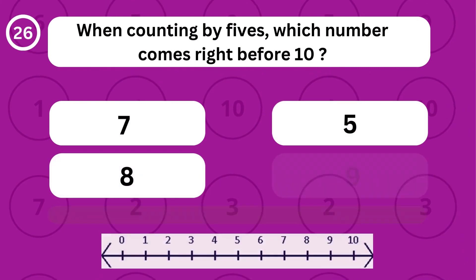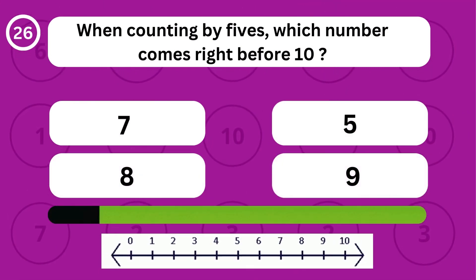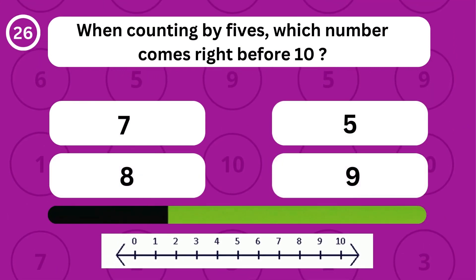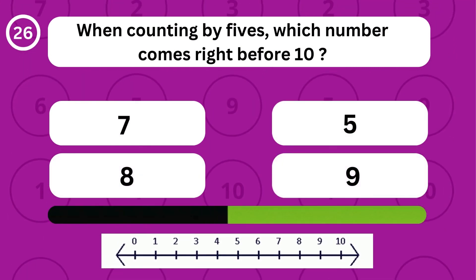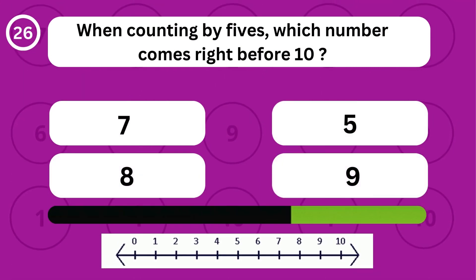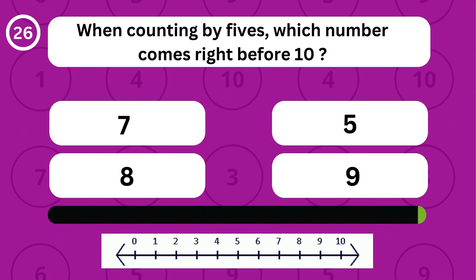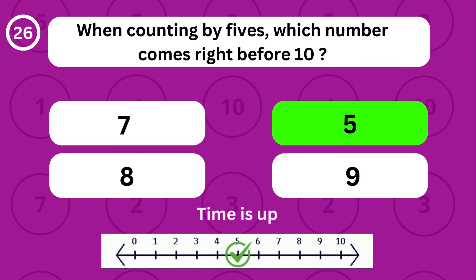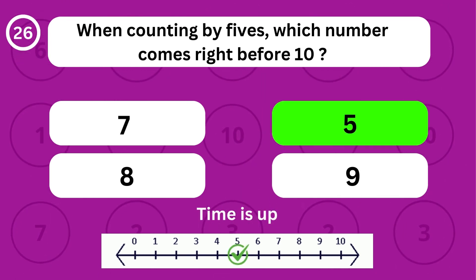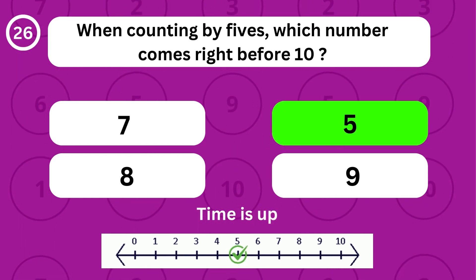When counting by fives, which number comes right before 10? When counting by fives, the number 5 comes right before 10.